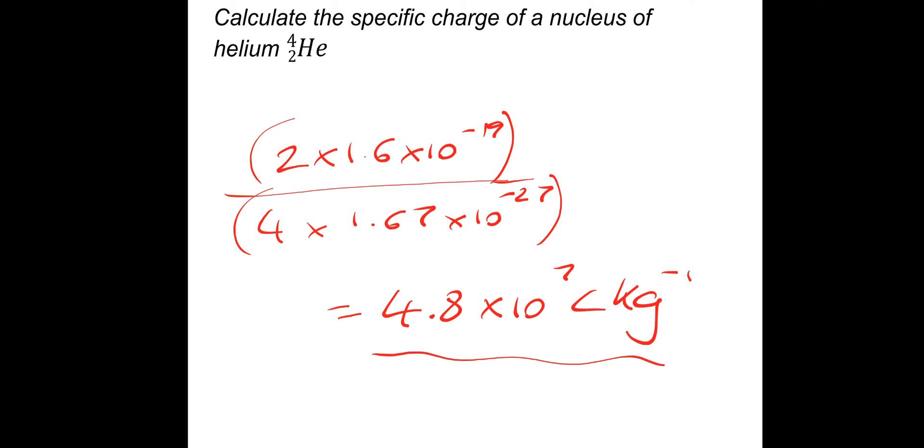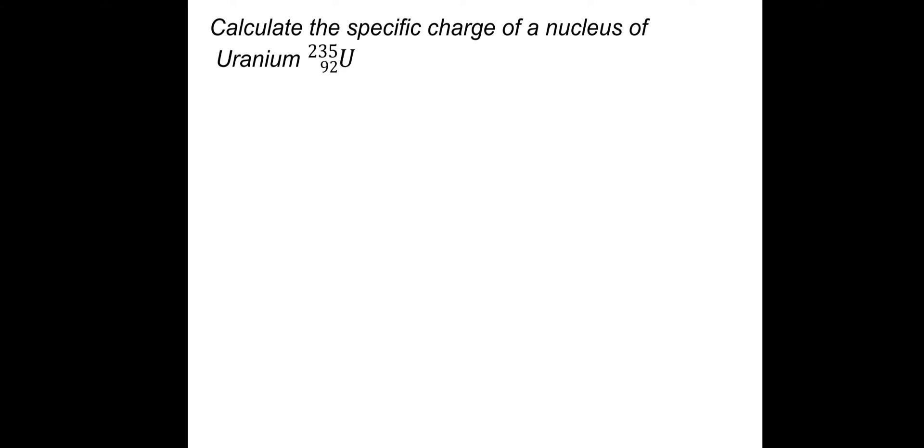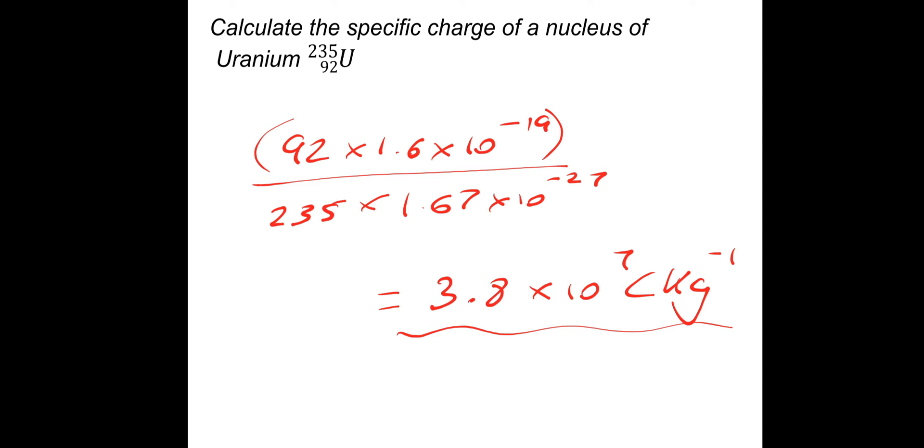So now we've done that example, if you want to have a go at this next one. So we need to calculate the specific charge of a nucleus of uranium 235. And when you've done it, I'll take you through the answer. So we need to do charge divided by mass. Total charge is 92 times the charge of a proton. And then we need to divide that by the total mass, which would be 235 multiplied by the U value, which is 1.67 times 10 to the minus 27. And that would give us a specific charge for this nucleus of 3.8 times 10 to the 7 coulombs per kilogram. Hopefully that went okay. Let's move on to the next bit.